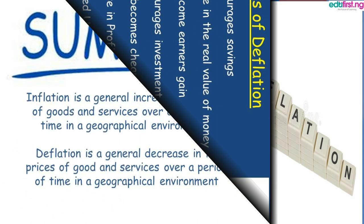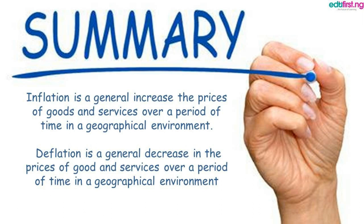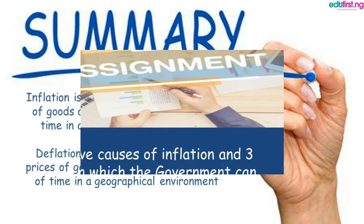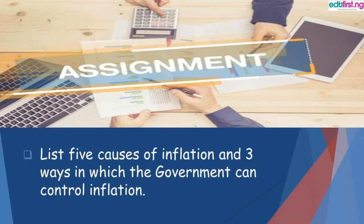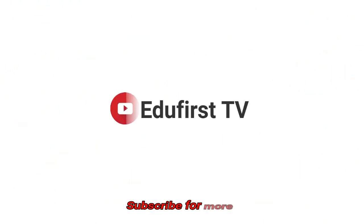In summary, inflation is the general increase in the prices of goods and services over a period of time in a geographical environment, while deflation is the general decrease in the prices of goods and services over a period of time in a geographical environment. Now for your assignment: list five causes of inflation and three ways in which the government can control inflation. I hope you enjoyed today's lesson. Goodbye!